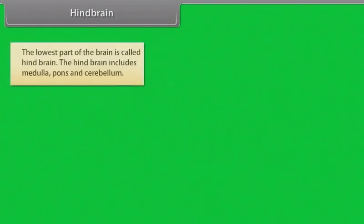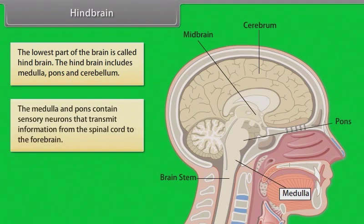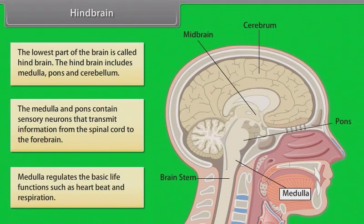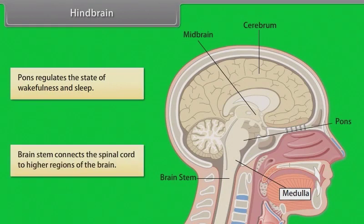The lowest part of the brain is called the hindbrain, which includes the medulla, pons, and cerebellum. The medulla and pons contain sensory neurons that transmit information from the spinal cord to the forebrain. The medulla regulates basic life functions such as heartbeat and respiration. Pons regulate the state of wakefulness and sleep. The brain stem connects the spinal cord to higher regions of the brain.